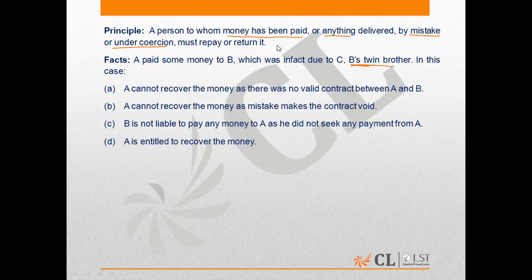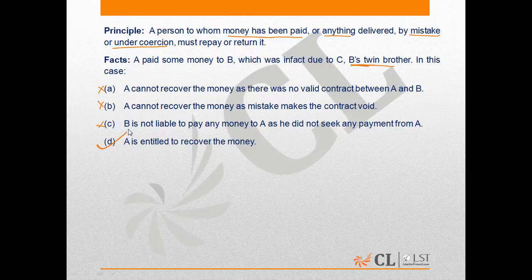As per the principle, C should return the money and A has the entitlement to recover it. Option A and Option B both say A cannot recover the money, so these are incorrect. Option C says B is not liable as he did not seek payment from A, but the principle states that anyone who receives something must return it — so C is also wrong. The correct answer is Option D.